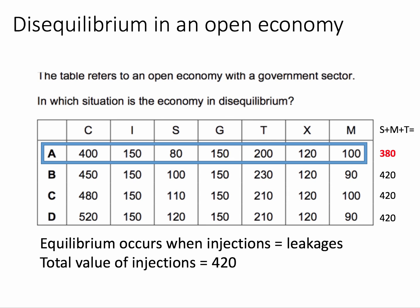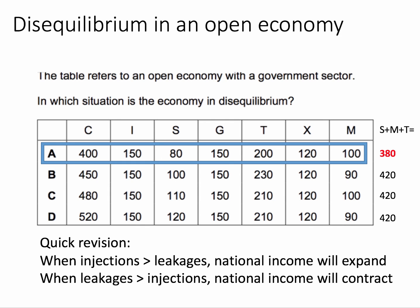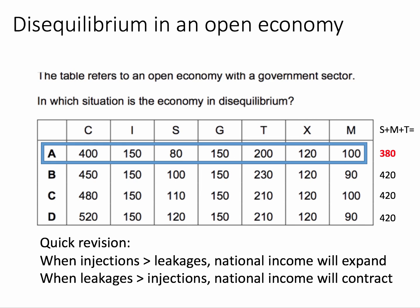So the right answer to this question is A — it's a disequilibrium where injections are greater than leakages. Quick bit of revision: when the rate of injection to the circular flow is higher than leakages, national income will expand. Conversely, when leakages are greater than injections, more money is leaving the circular flow, and national income will contract — the economy may suffer a slowdown or perhaps even a recession.